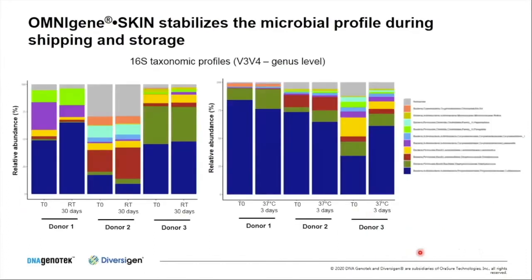16S taxonomic profiles from those samples confirm good profile stability. Showing three representative donors at baseline versus storage at room temperature for 30 days: the uniqueness of each donor profile is maintained. A taxonomic bar plot showing relative abundance at baseline versus following 37°C incubation for three days also shows no significant change in the profile for any donors, maintaining stability even when incubating at a temperature that could promote bacterial growth.